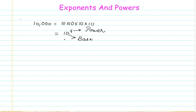This whole number, 10 to the power of 4, is known as the exponent form of representation. So 10 becomes my base, 4 becomes my power, and this whole expression becomes my exponent form. Now there would be a question: is it always 10 that can be the base, or can there be other bases?